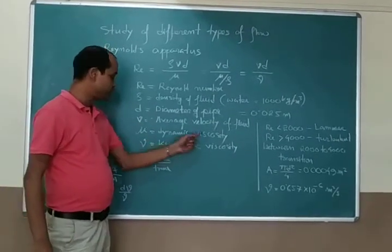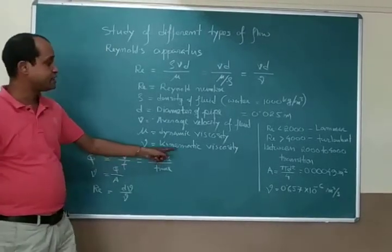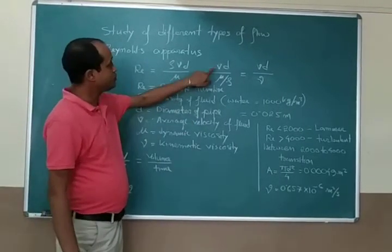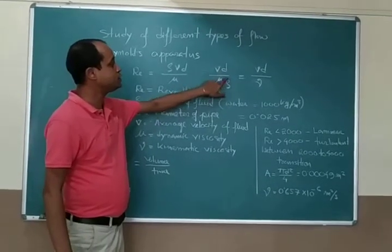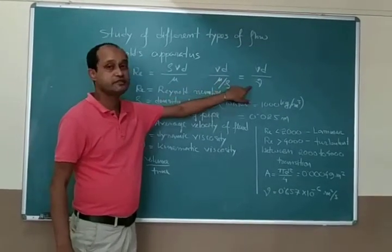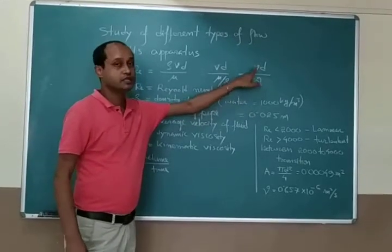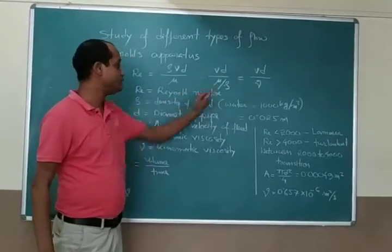Small v is the average velocity of the fluid, mu is the dynamic viscosity and nu is the kinematic viscosity. Here v d by mu by rho, this mu by rho gives you the kinematic viscosity, so this is our concerned formula.